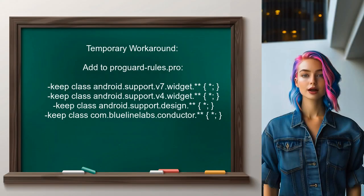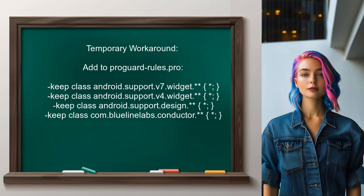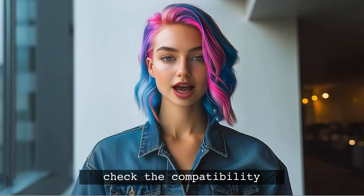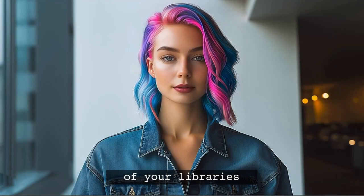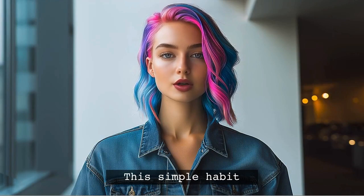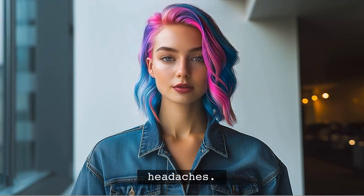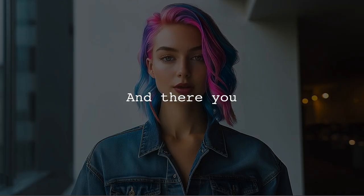Additionally, if you still encounter issues, a temporary workaround is available: you can add specific instructions to your ProGuard rules file to keep certain classes. Here's the crucial tip I promised — always check the compatibility of your libraries with the Gradle plugin version you are using. This simple habit can save you a lot of headaches.